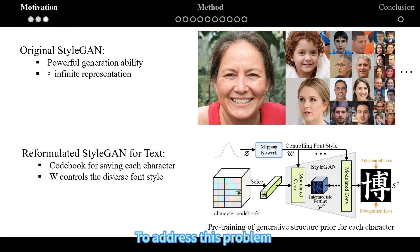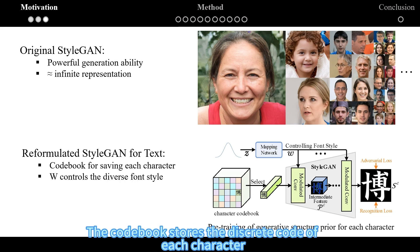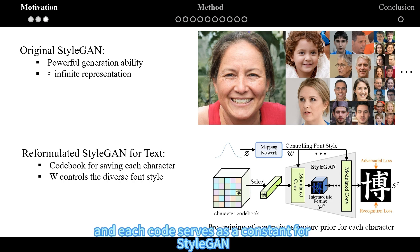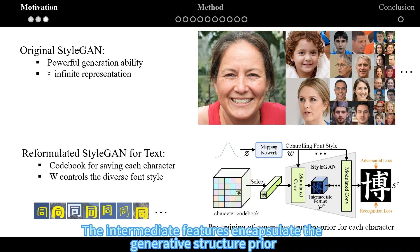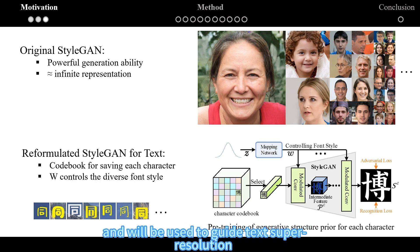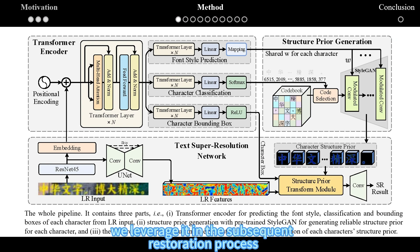To address this problem, we reformulate StyleGAN by replacing the single constant with discrete codes. The codebook stores the discrete code of each character, and each code serves as a constant for StyleGAN to generate a specific high-resolution character. The intermediate features encapsulate the generative structure prior and will be used to guide the text super-resolution. After pre-training the text StyleGAN, we leverage it in the subsequent restoration process.